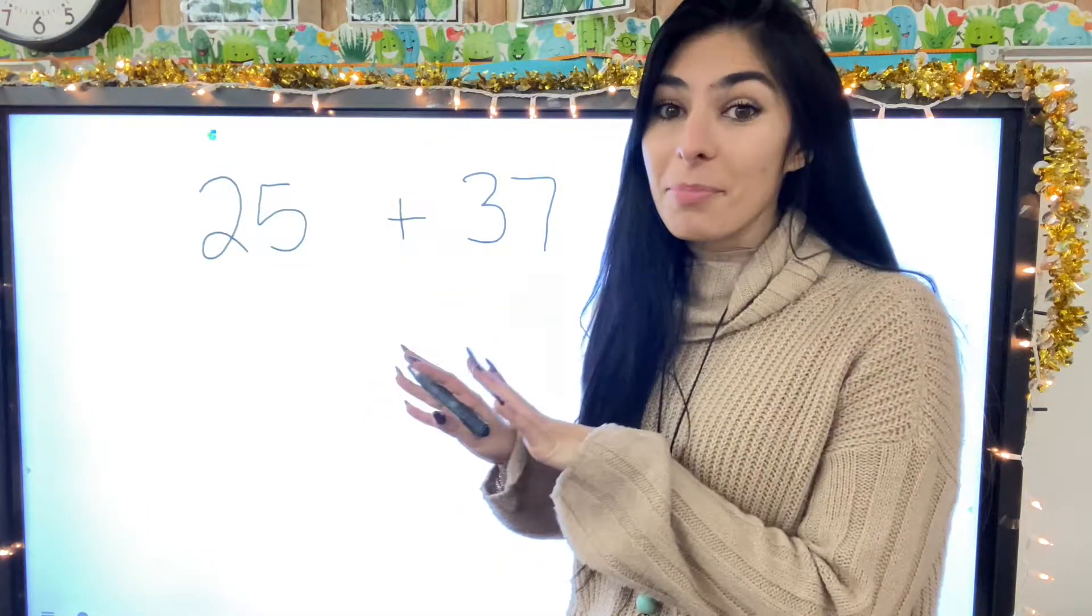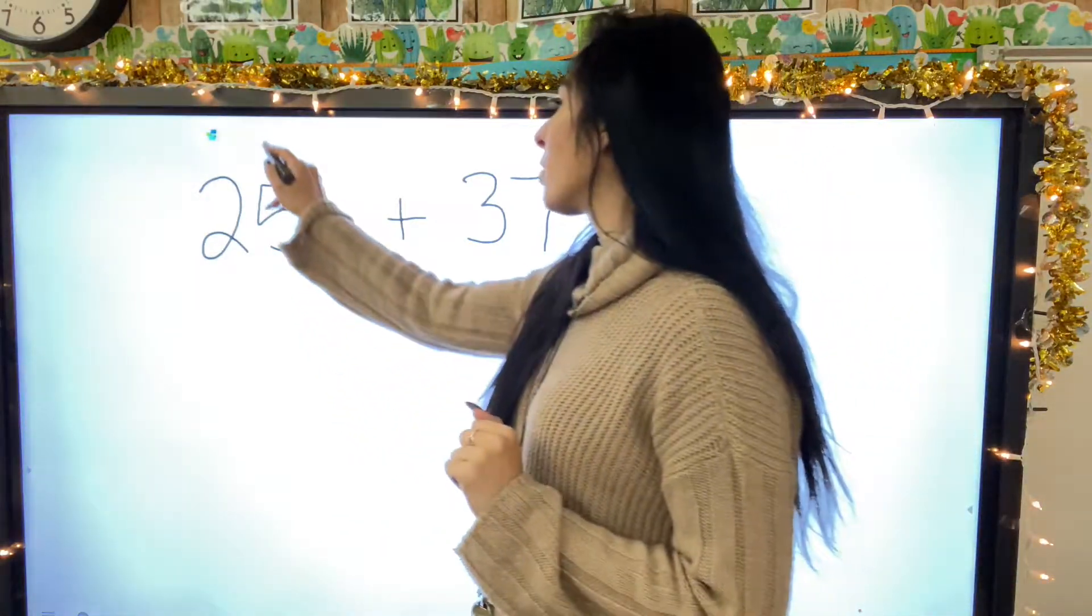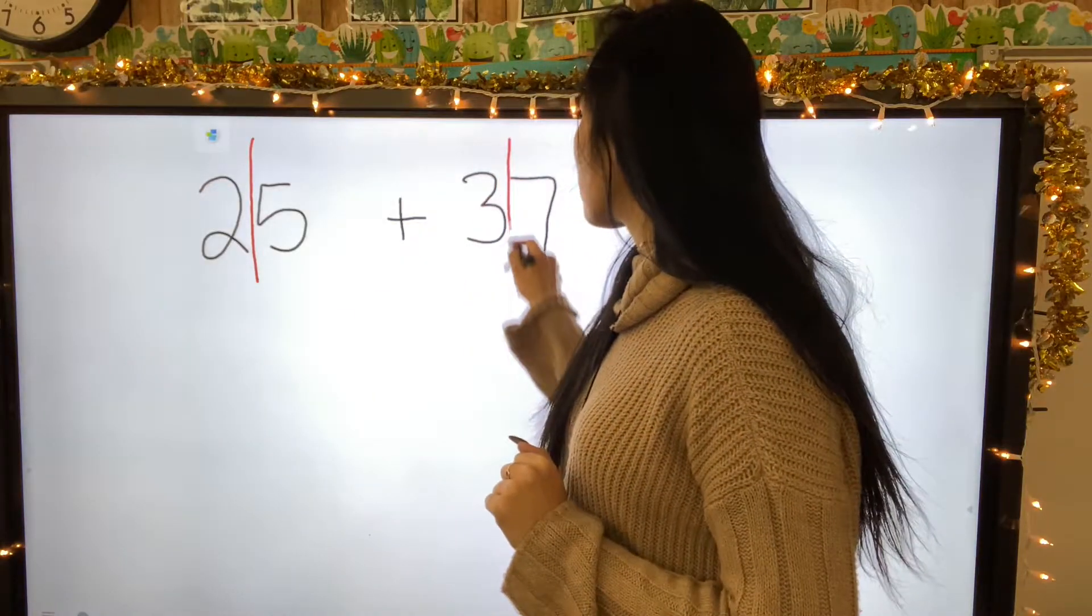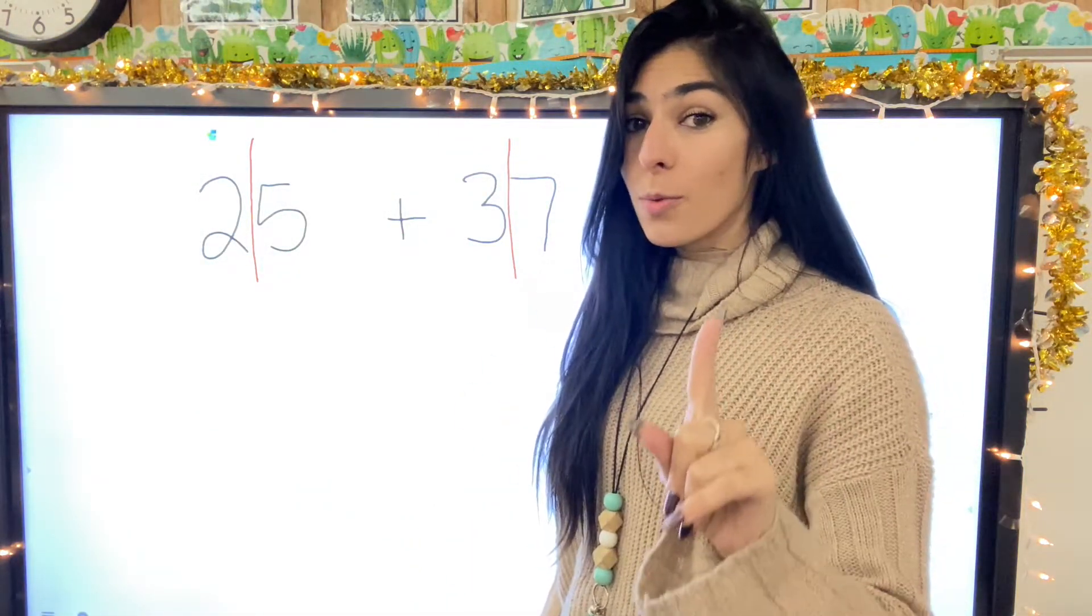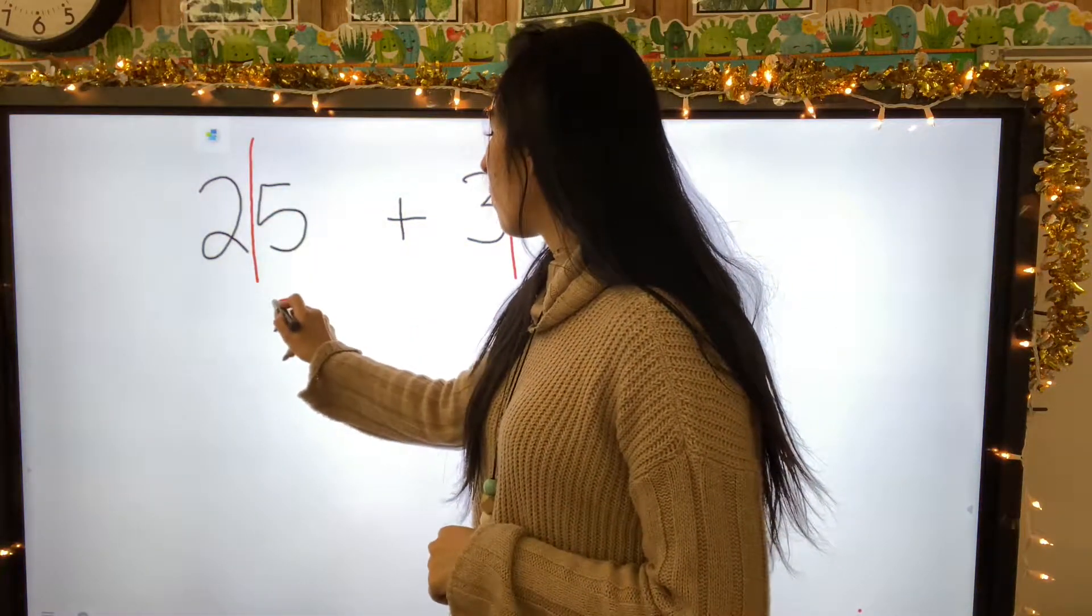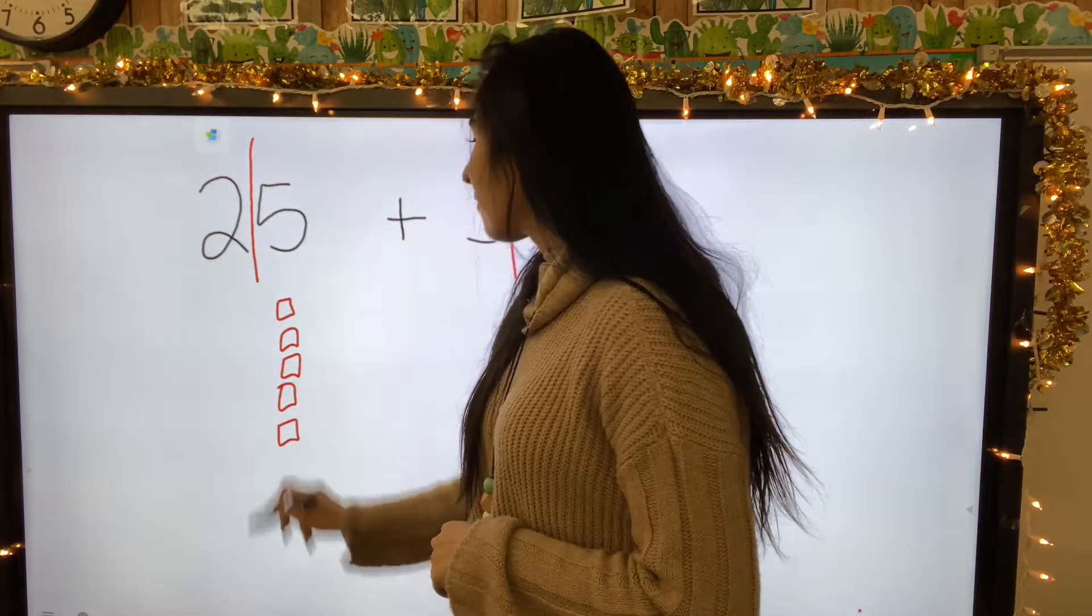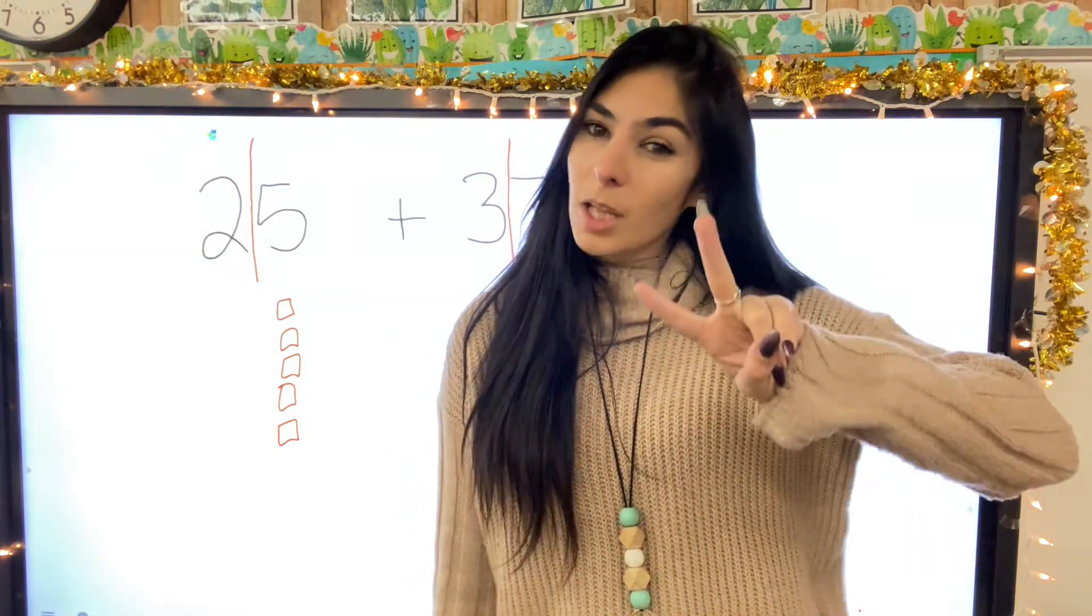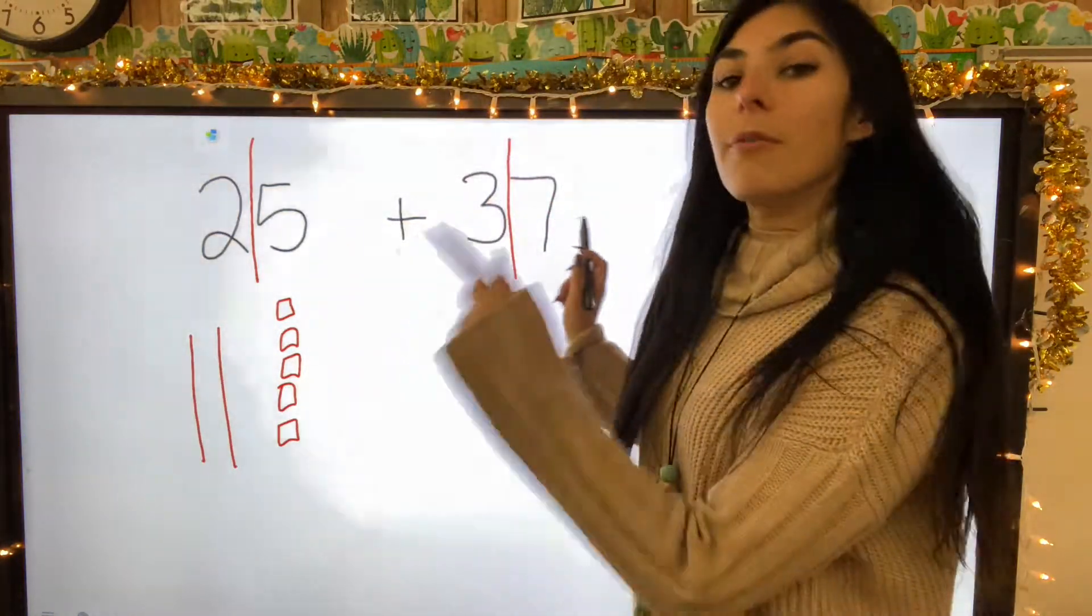So my first equation, I have 35 plus 27. First thing I'm going to do is draw them out. Step one is always chop it down the middle. We have our ones and tens. Always start with the ones. So we have five: one, two, three, four, five. How many tens? Two.